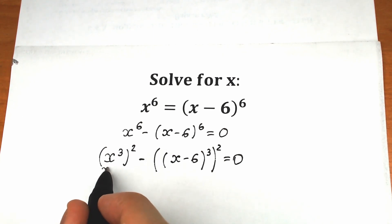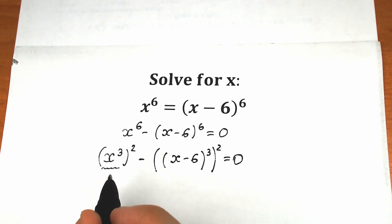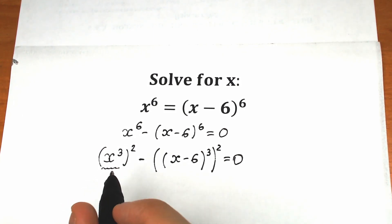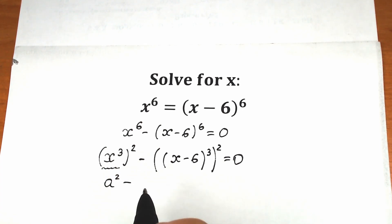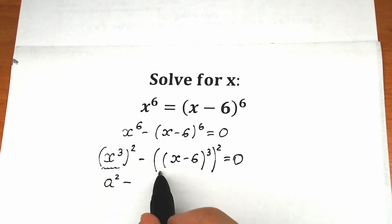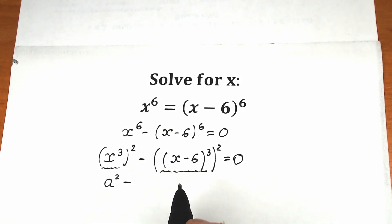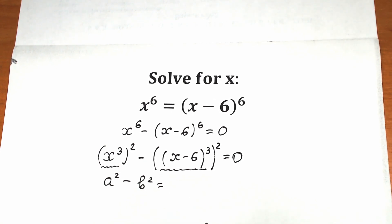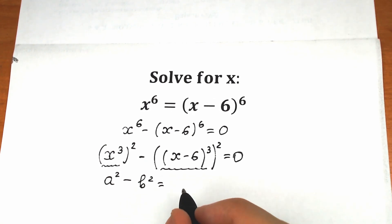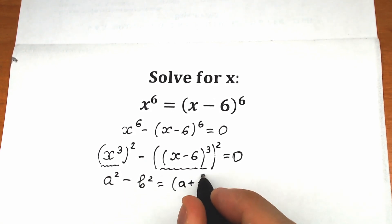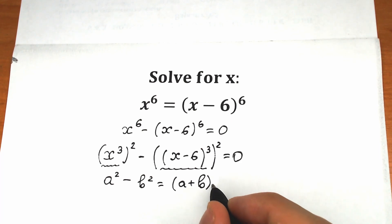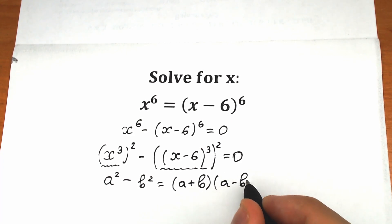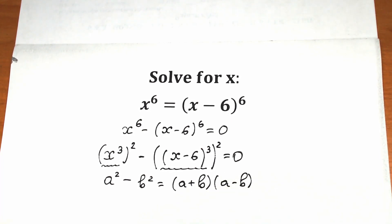We have the difference of two squares: this is our a squared, and this expression is our b. Everyone knows the identity a squared minus b squared equals a plus b times a minus b. Let's apply this formula right here.